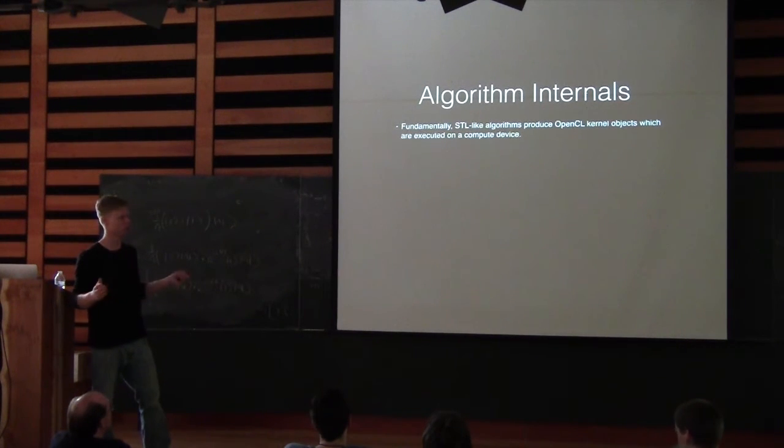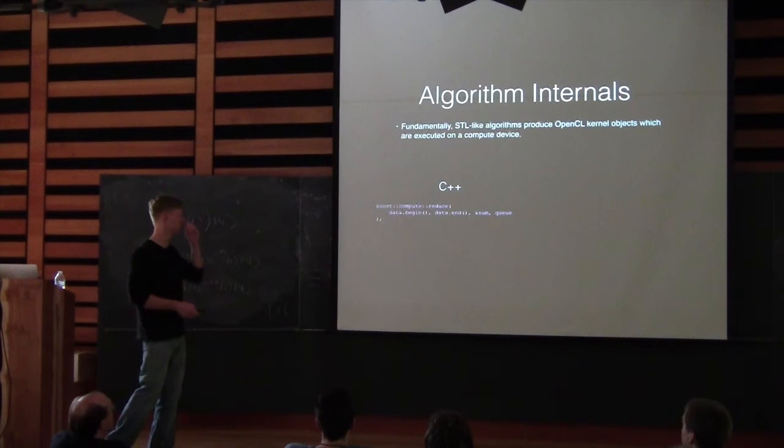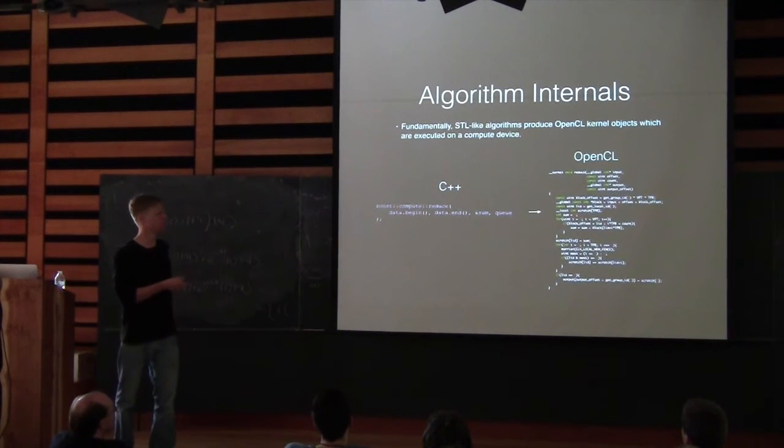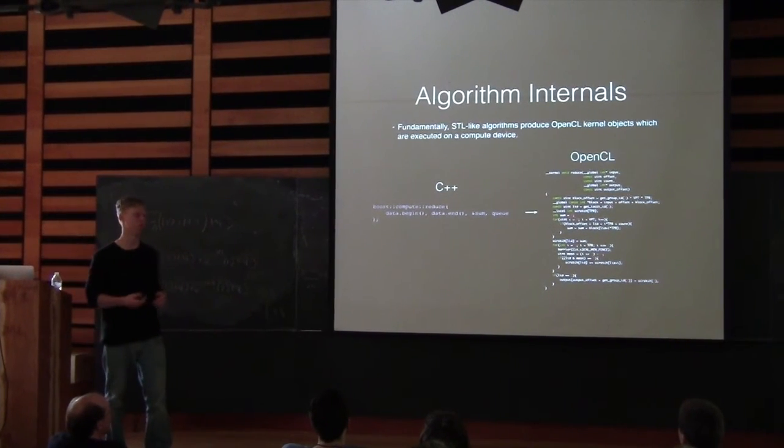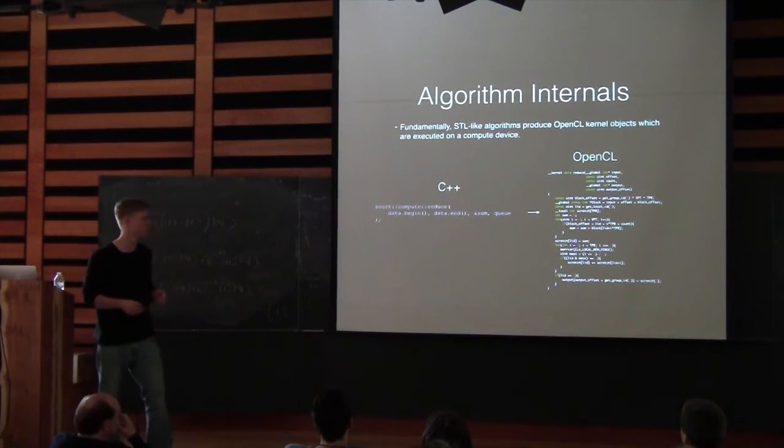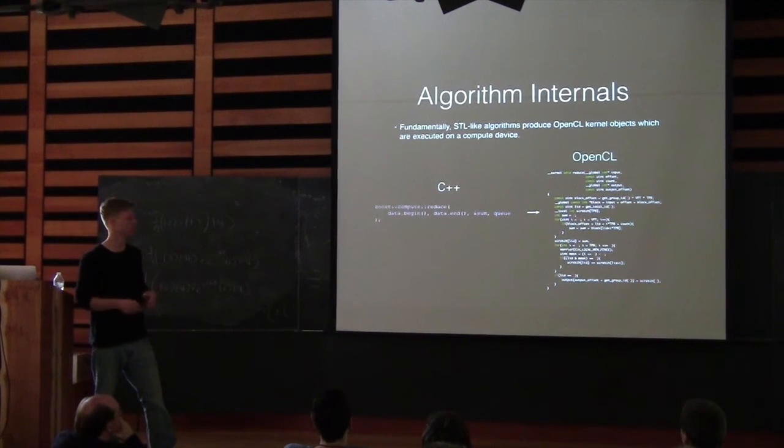How does this work? Fundamentally, any time the user invokes one of these algorithms or higher level functions provided by Boost Compute, we must internally transform that operation into an OpenCL program object which gets compiled and executed on the device. Where in C++ the user calls this, internally we generate an OpenCL kernel which looks somewhat like this. This kernel is responsible for distributing the work over all the cores in a GPU, running multiple passes, reducing the whole thing, and doing it as efficiently as we can.